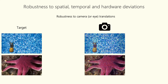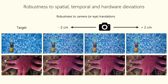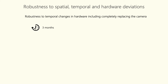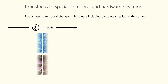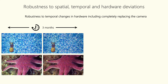However, we need the learned hardware to be robust and tolerant to additional spatial, temporal, and hardware deviations, which is necessary for practical applications. We show robustness to camera translation, equivalent to eye translation or slippage of holographic near-eye display glasses on the nose — the image quality remains the same. We also tested robustness over a time span of three months, during which the hardware was disassembled, moved, and reassembled. Once trained, the learned hardware is robust to hardware and temporal deviations, meaning a one-time calibration is sufficient.